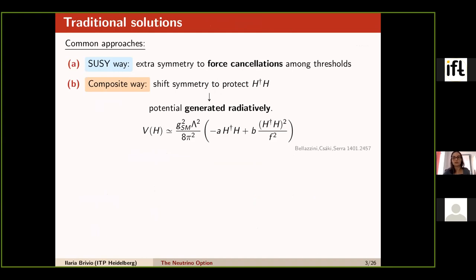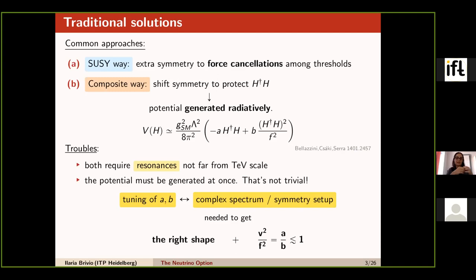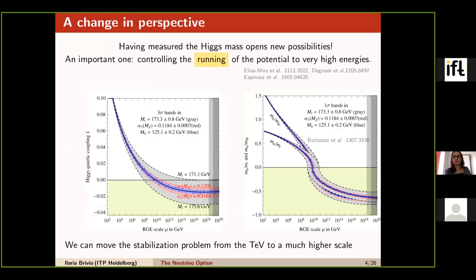The suppression approach is the composite Higgs idea — imposing a shift symmetry that forbids the entire scalar potential, making it naturally suppressed. Both approaches require new resonances not too far from the TeV scale, since they try to solve the problem right at the electroweak scale. The scalar potential must be generated all at once, which is nontrivial: one needs the right shape of the effective potential while complying with experimental constraints, and there is tension in separating these two things even in the composite Higgs case.